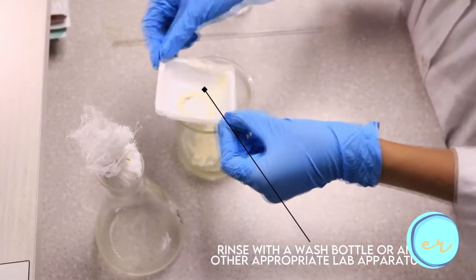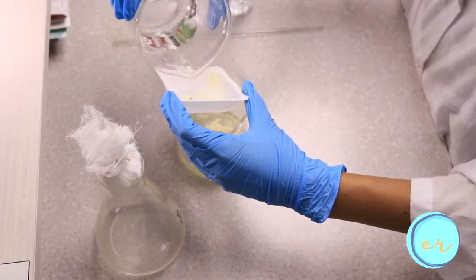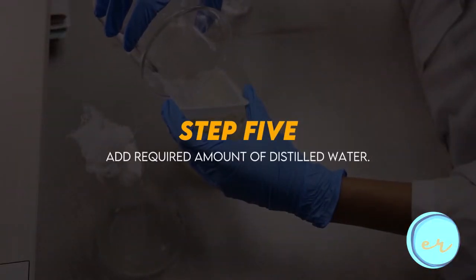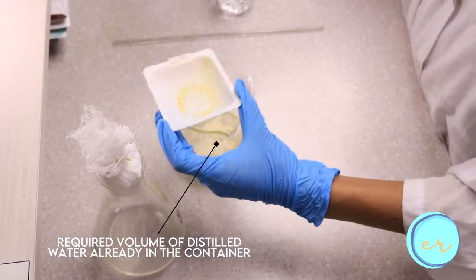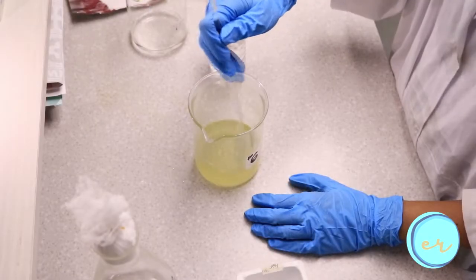Wash off any sticking powder with distilled water into the flask using a wash bottle. Now add the required volume of distilled water while swirling the flask or bottle. Mix after each addition.